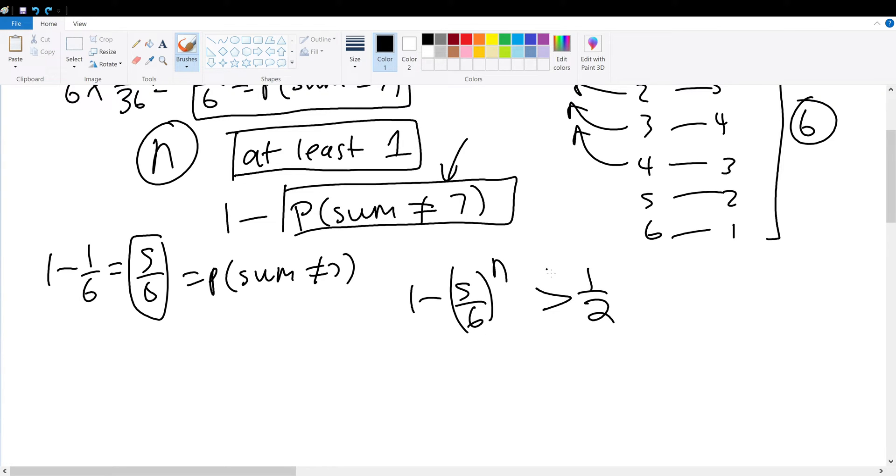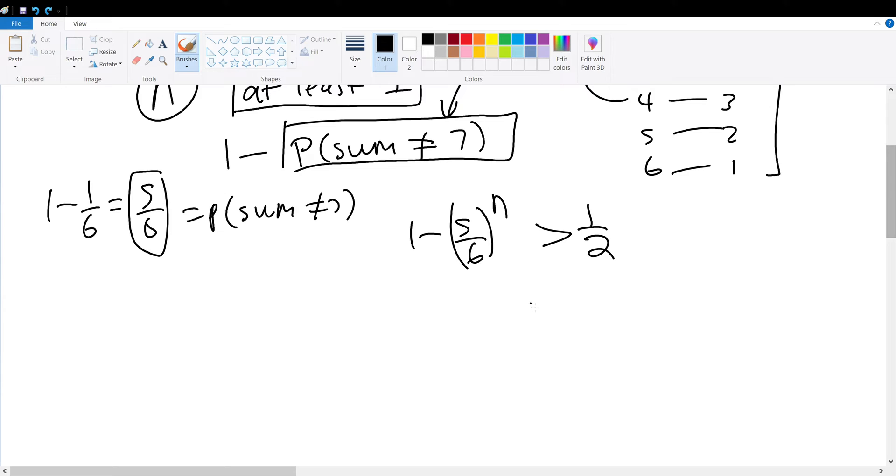So 1 - (5/6)^n > 1/2 is what the question represents. Let's simplify: -(5/6)^n > -1/2. Multiplying by negative one on both sides, we must change the direction of the sign, so (5/6)^n < 1/2.